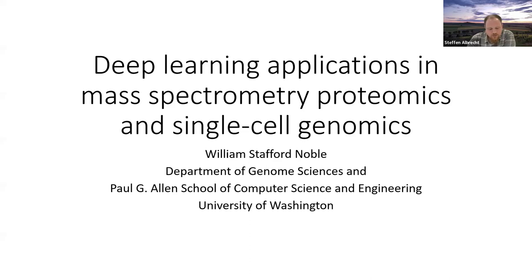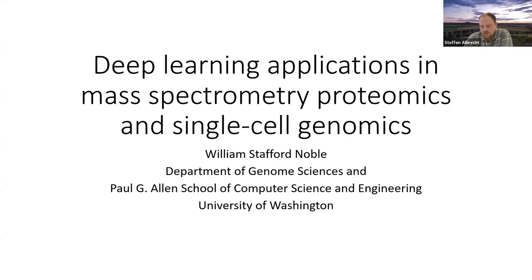William received a PhD in computer science and cognitive science from the University of California, where he also did a short postdoc. He then became assistant professor in the Department of Computer Science at Columbia University, and now for more than 20 years he's been at the University of Washington. He also has adjunct appointments at the Paul Allen School of Computer Science in Seattle. I'm really looking forward to this talk because it's strongly related to my PhD work in computational biology — I read many papers from William and his research lab.